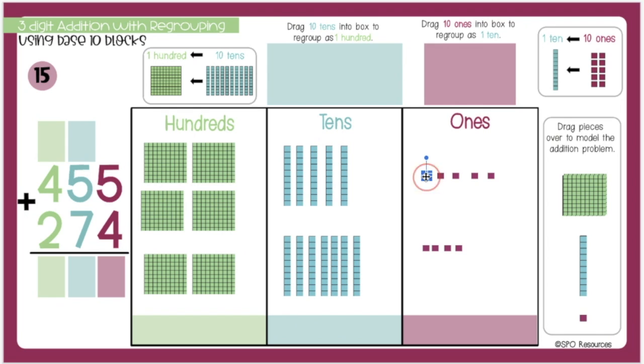In the ones place, I have 1, 2, 3, 4, 5, 6, 7, 8, 9 ones. I don't have 10, so I do not need to regroup, so I'll have 9 ones in my ones place.